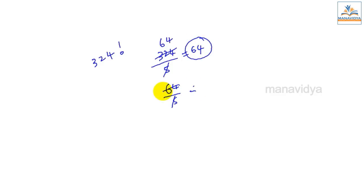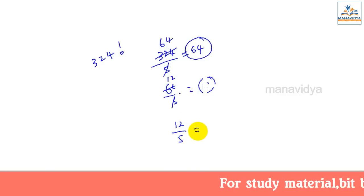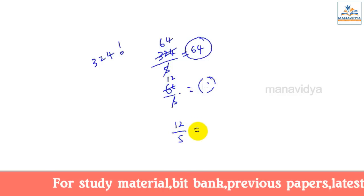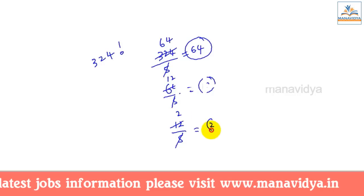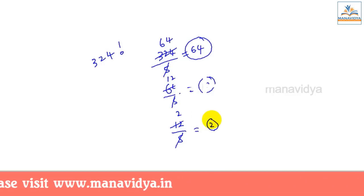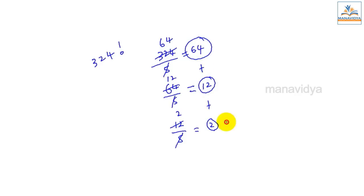The remainder is not important. We take 64 and divide by 5, which gives 12 remainder 4. Then 12 divided by 5 gives 2 remainder 2.